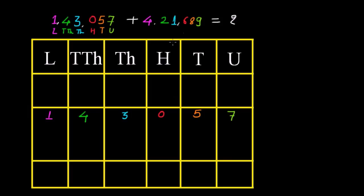Similarly we will organize the second number in vertical fashion: 4, 2, 1, 6, 8 and 9. So we have to add these 2 numbers.